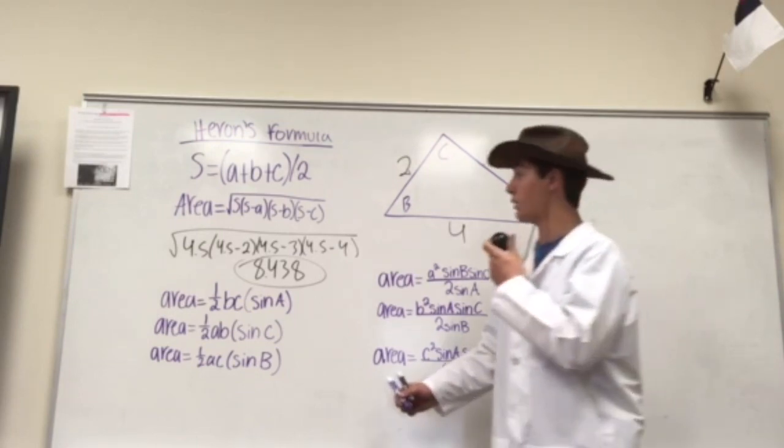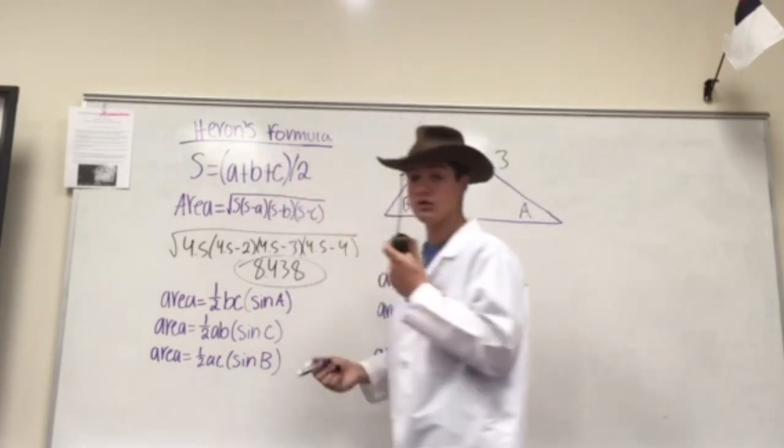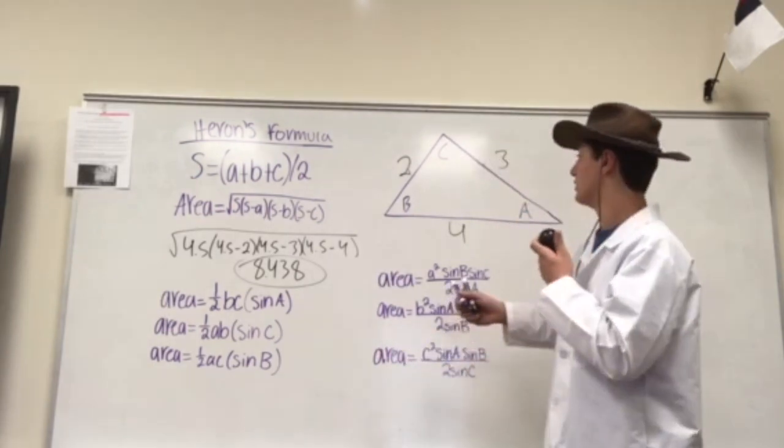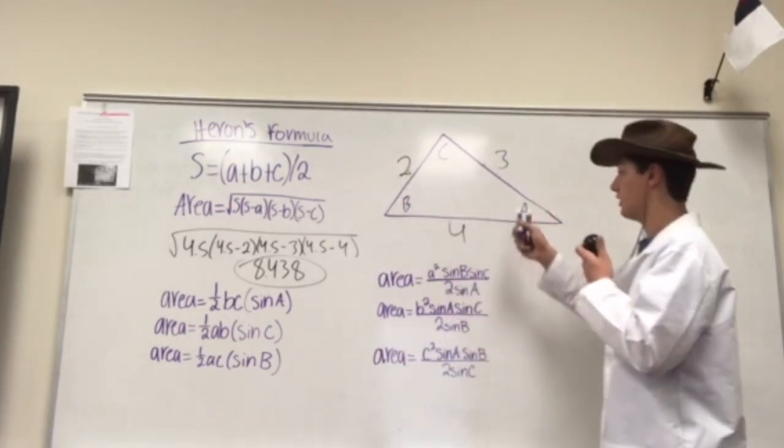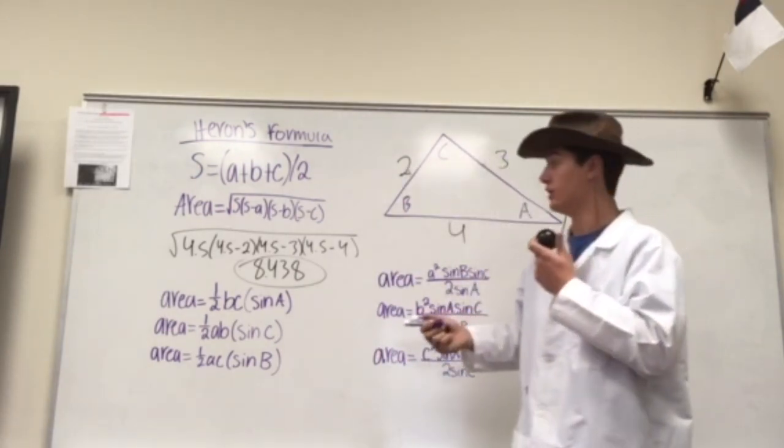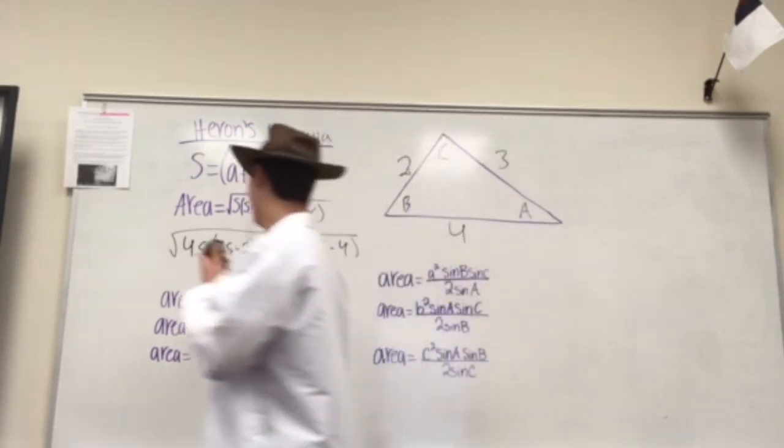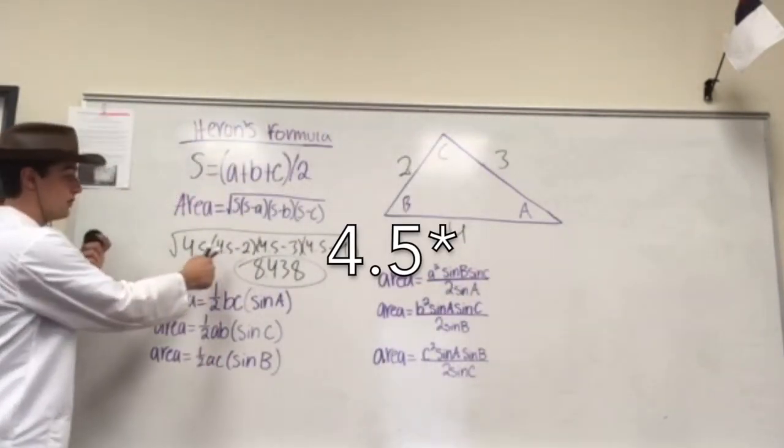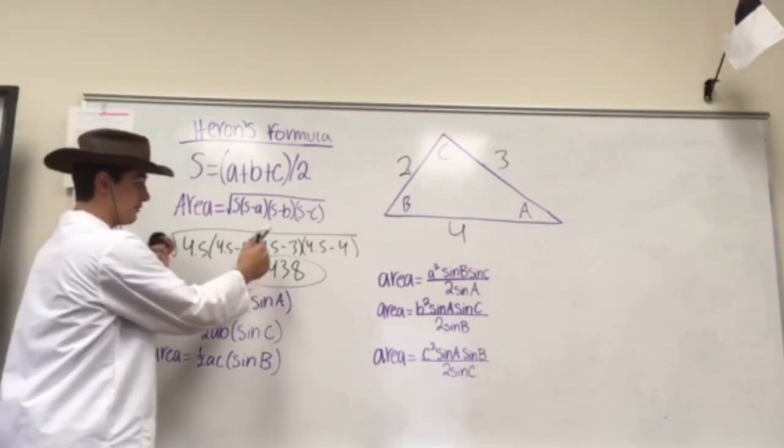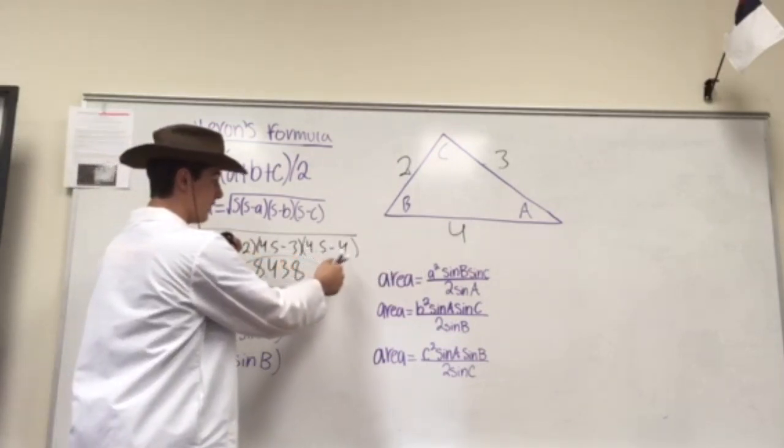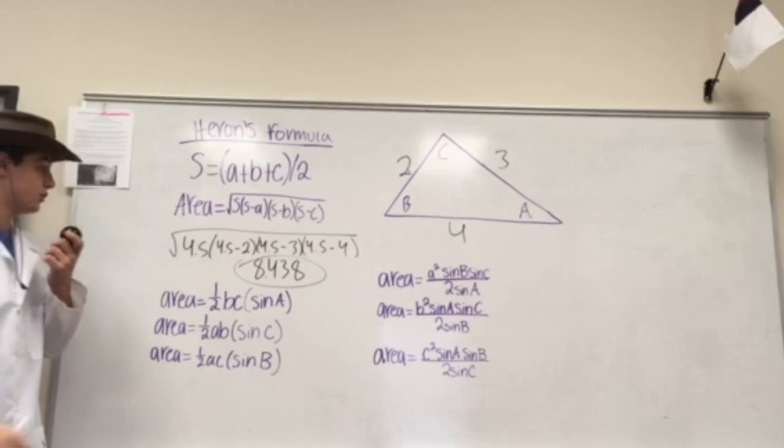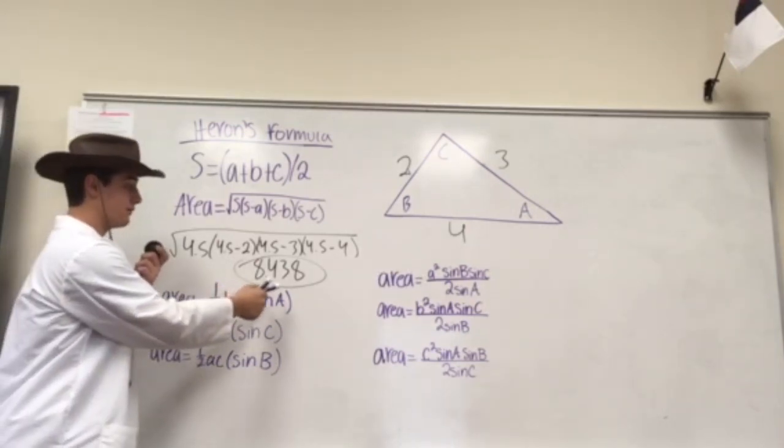Now, let's work on a problem for Heron's formula. First, we have to find the semi-perimeter. So we take 2 plus 3 plus 4 and divide it by 2 to give you 4.5. Then, what we're going to do is take 4.5 minus 2, 4.5 minus 3, and 4.5 minus 4. And in result, you end up getting the area to be 8.438.